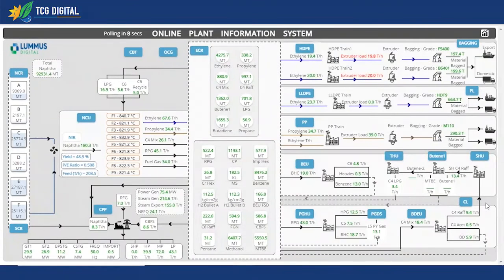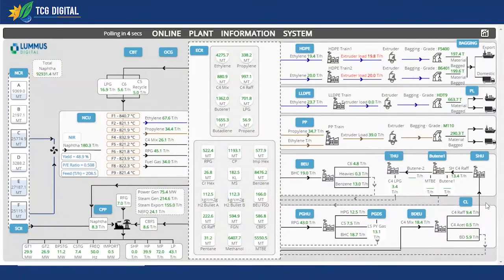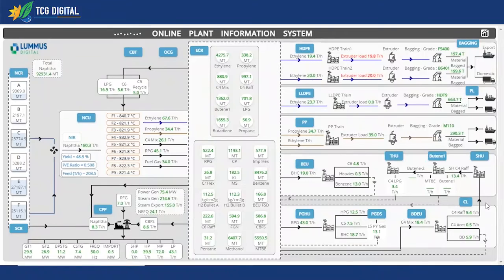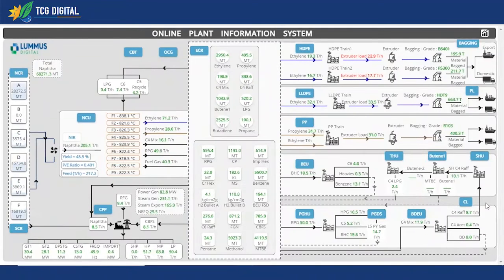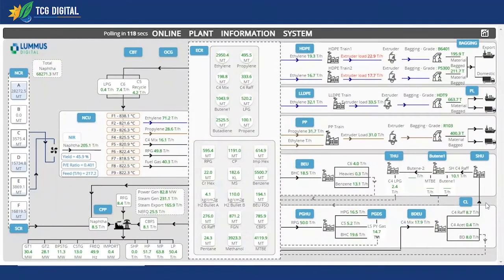We are capturing 15,000 plus tags or data elements that come in from different sources: the historian, the DCS system, and different sensors — whether it could be an energy sensor, weight sensors, flow meters, and so on.